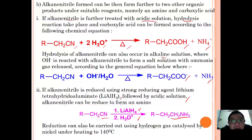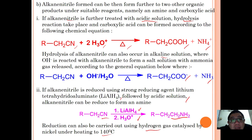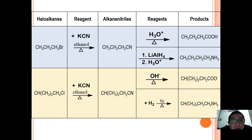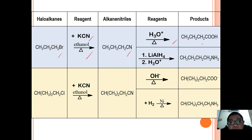This reduction can also be carried out using hydrogen gas catalyzed by nickel heated at 140 degrees Celsius. For example, reacting chloroethane with potassium cyanide in ethanol forms propanenitrile; acidic hydrolysis will form butanoic acid; and reduction with LiAlH4 followed by H2O+ will form butan-1-amine.